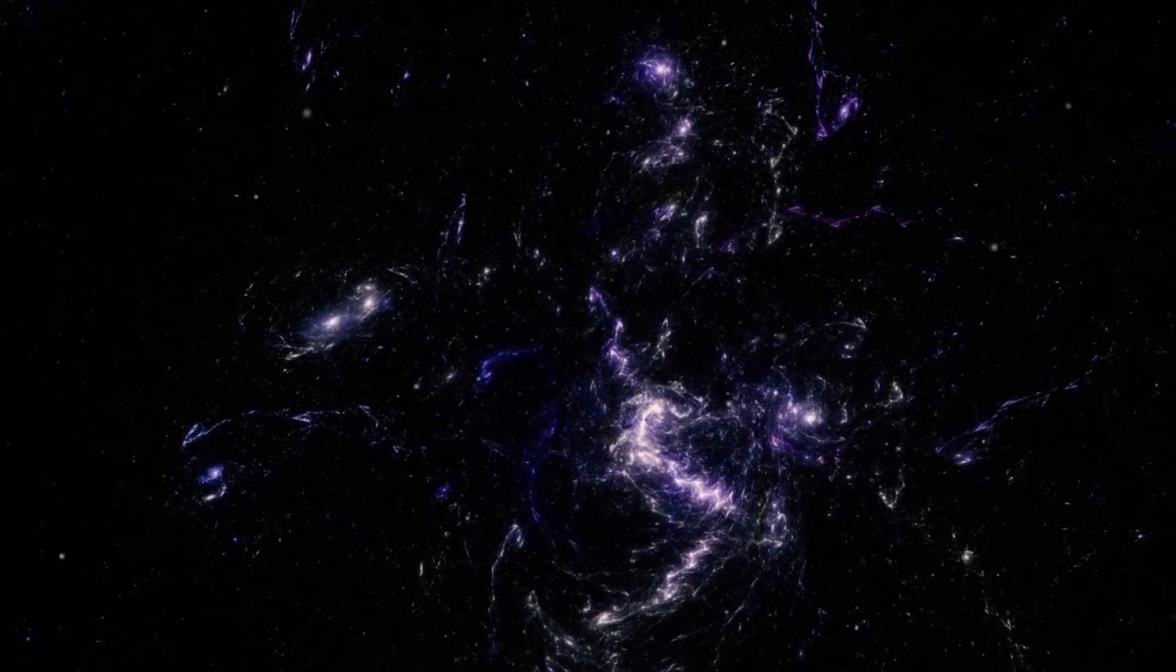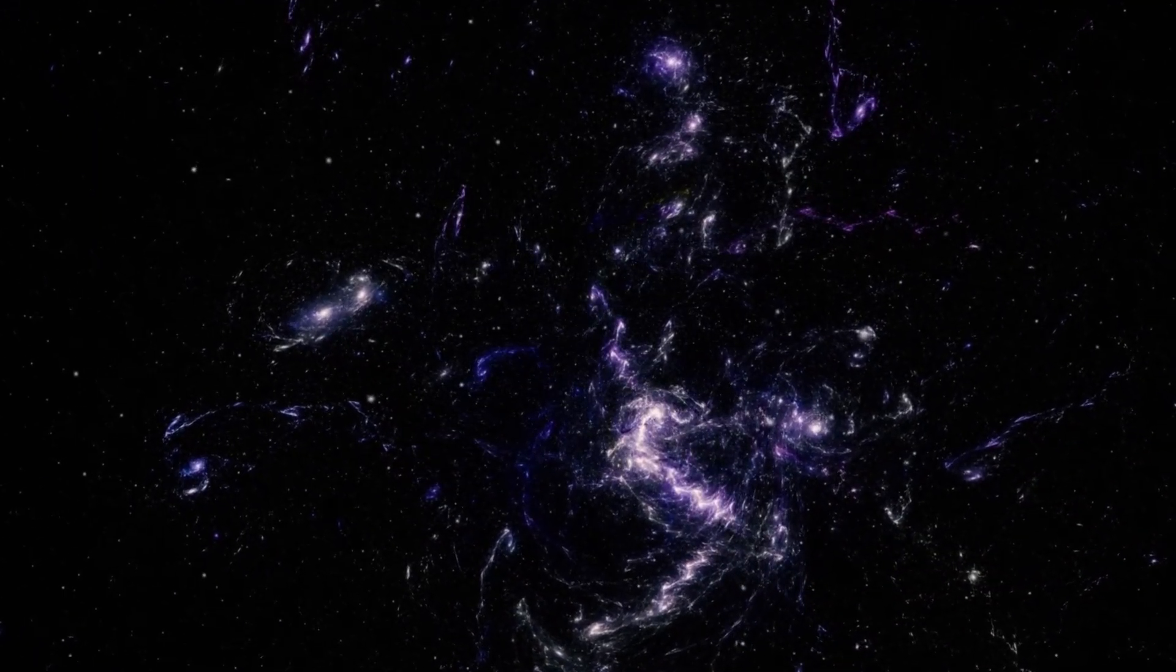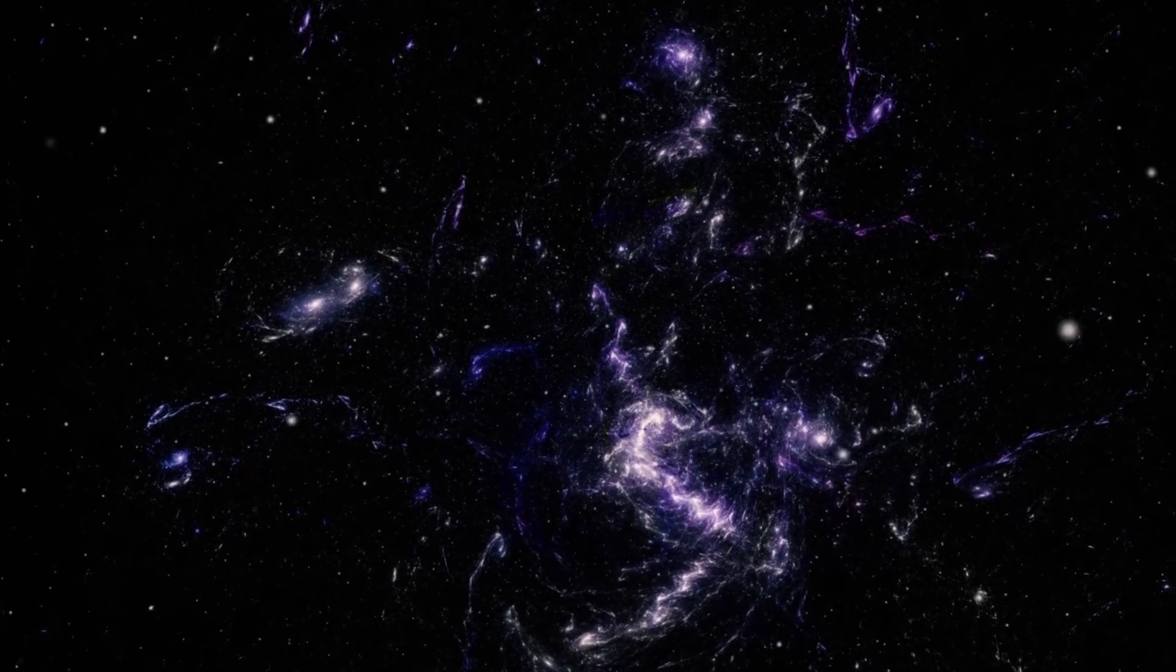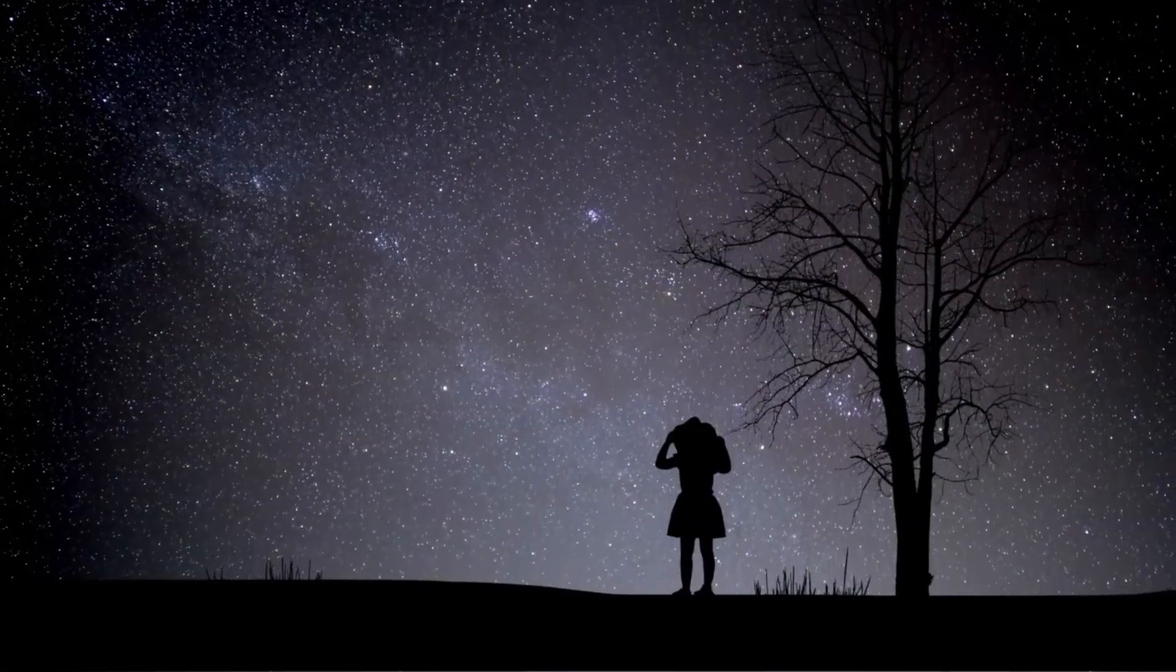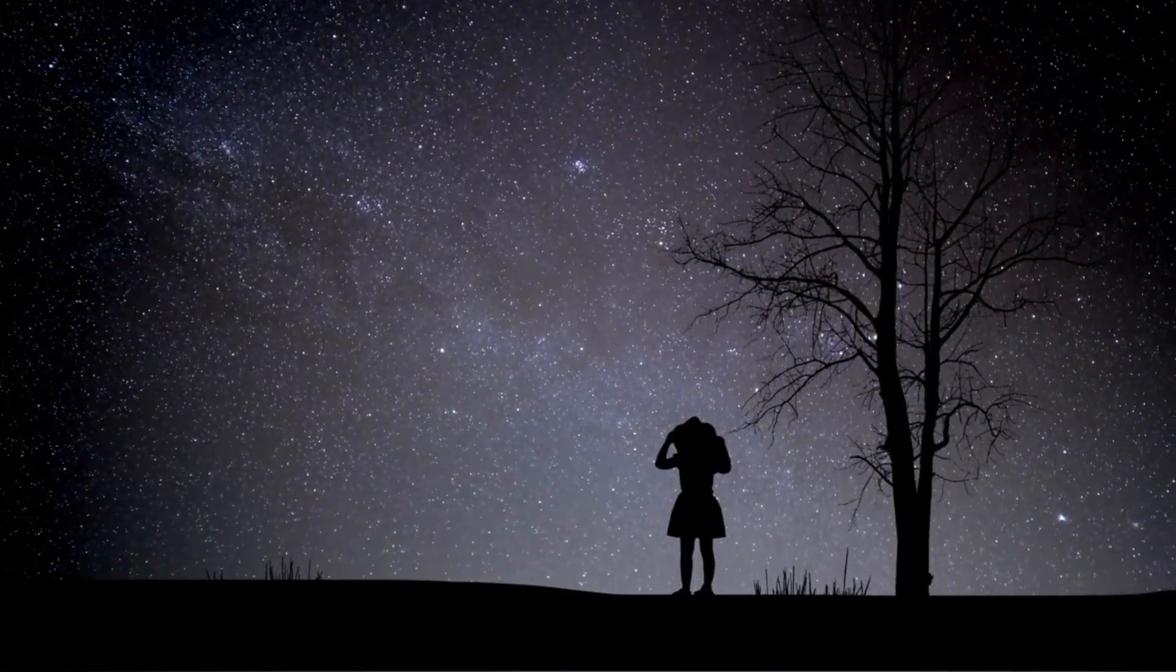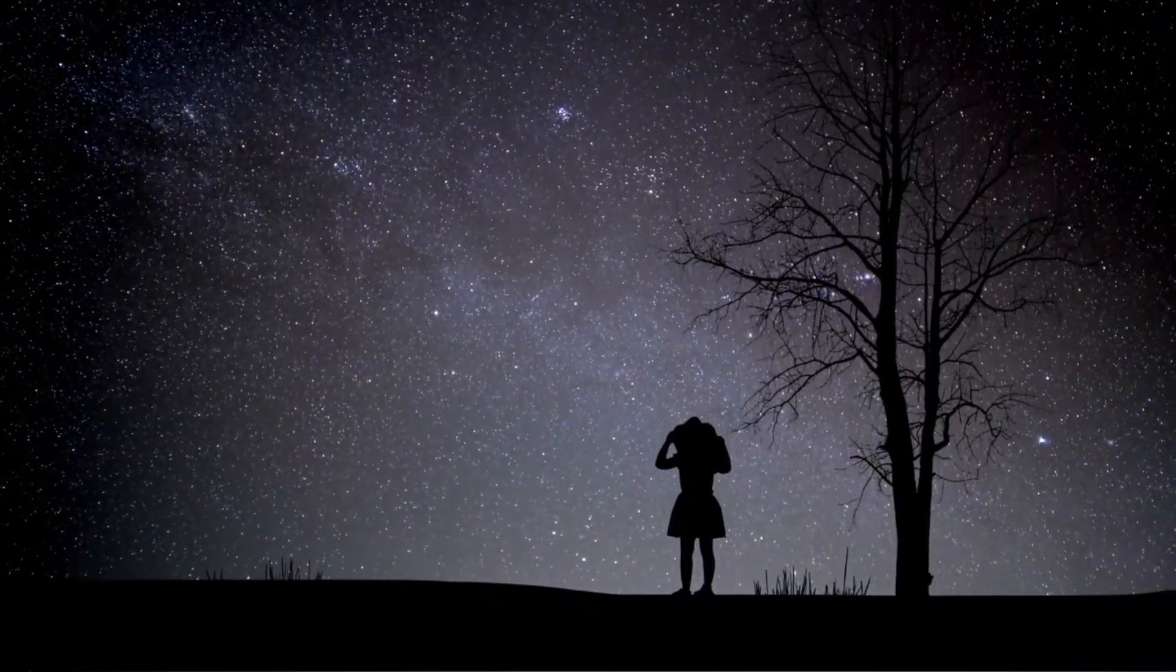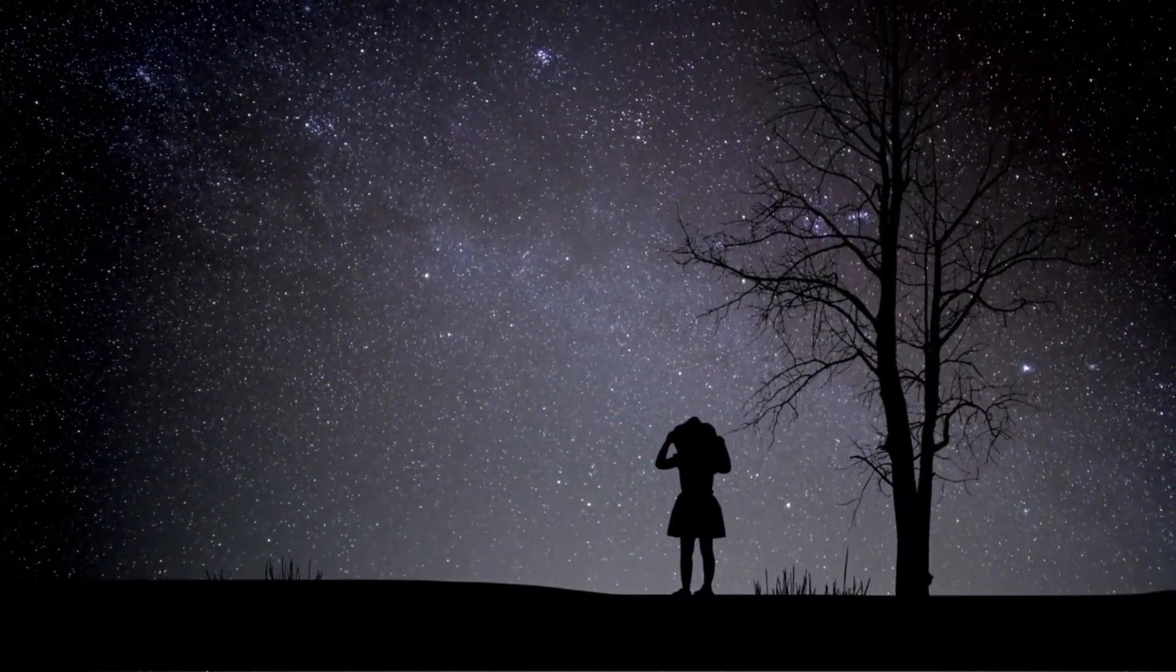As we move away from our galaxy, we encounter our local group of galaxies, followed by the Virgo cluster, which contains more than 1,500 galaxies. The Virgo cluster is part of a larger supercluster known as Laniakea, which contains approximately 100,000 galaxies.